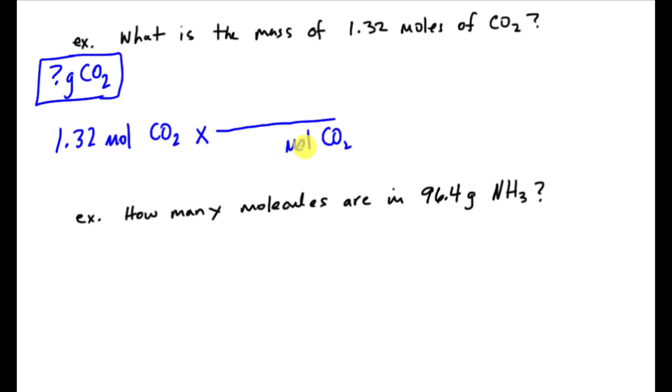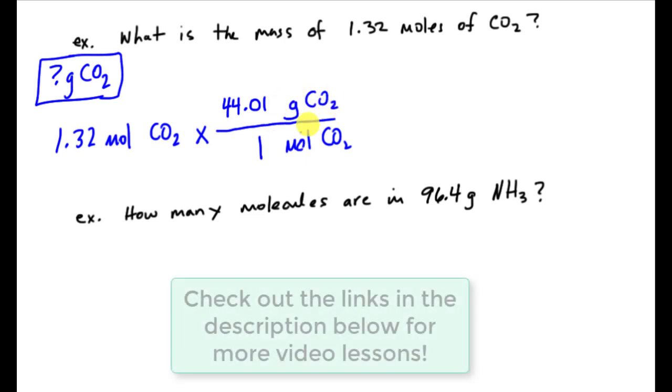And since I want to convert from moles, I want to go to the mass, the mass on the top. And then I just have to think about how these two measurements are connected to each other, grams and moles. Obviously, it's going to be the molar mass. So I'm going to put mole on the bottom. And I already calculated the molar mass of this compound. So I have to add up all the carbons and all the oxygens, which I did previously. And I get 44.01.